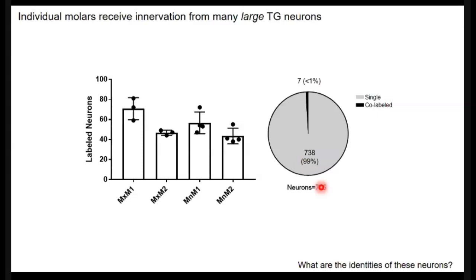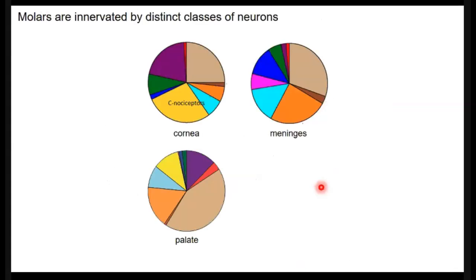So to start to explore this, we wanted to ask about the identity of these neurons. So we can look at the classification of the neurons that innervate other craniofacial structures for reference. For these, we apply the retrograde dye to each tissue and use our in-situ classification strategy. If we look at the cornea, what we would consider a very specialized structure, we can see that it's innervated by a variety of classes, and these classes include C-fiber nociceptors as well, and those are represented by the yellow and the cyan pie slices. What would we expect about the neurons that innervate the molars? We could predict that we'd find many classes. It seems like most tissues are innervated by many classes of neurons.